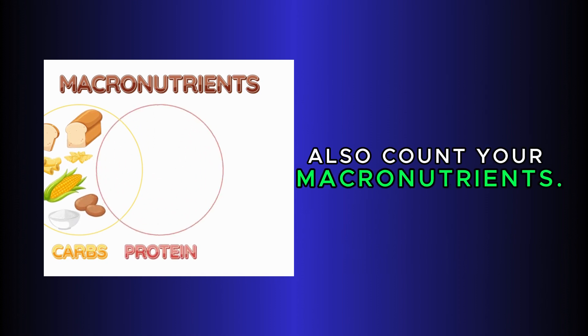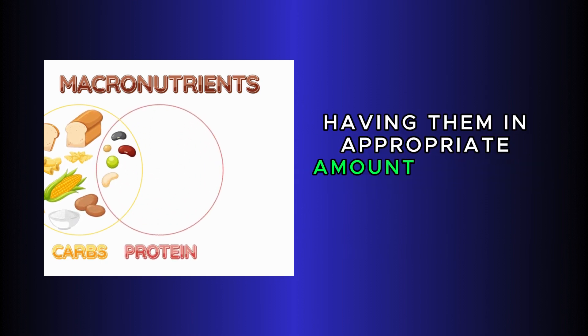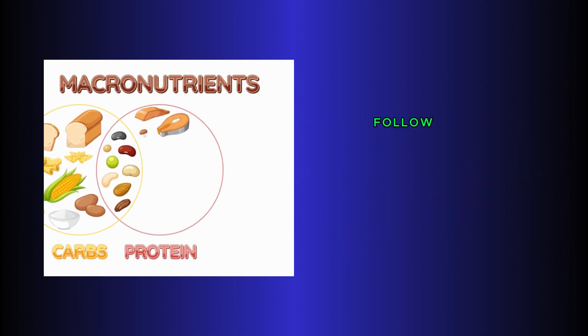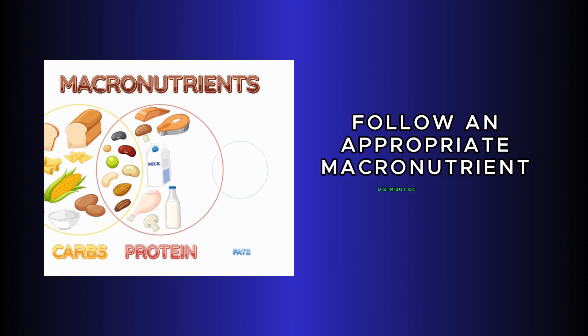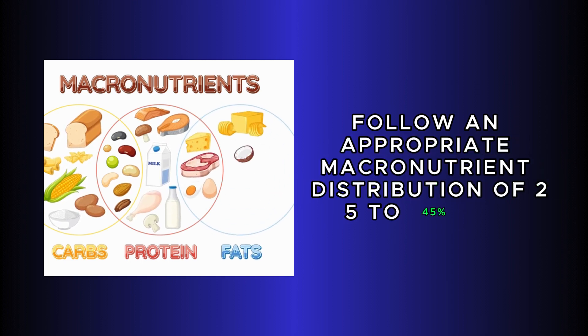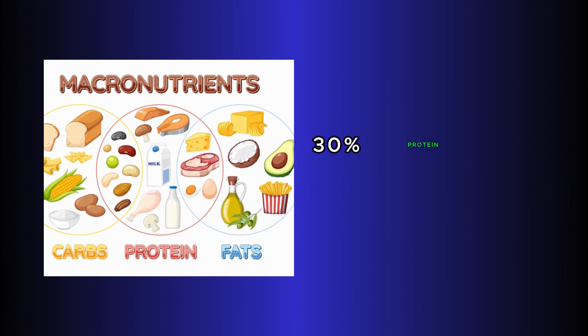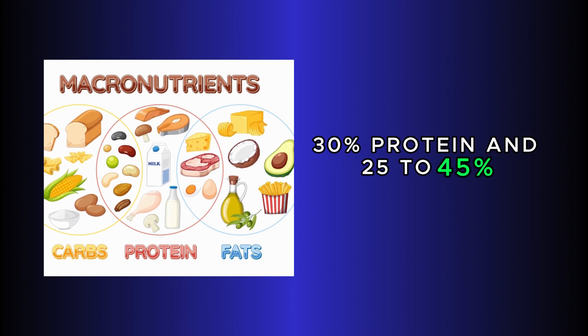Also, count your macronutrients. Having them in appropriate amount can help balance hormones. Follow an appropriate macronutrient distribution of 25-45% fat, 30% protein, and 25-45% carbohydrates.